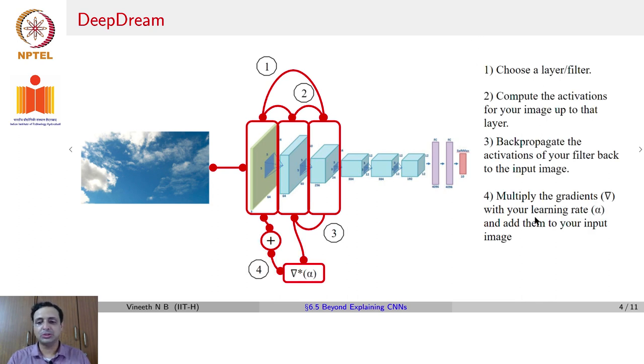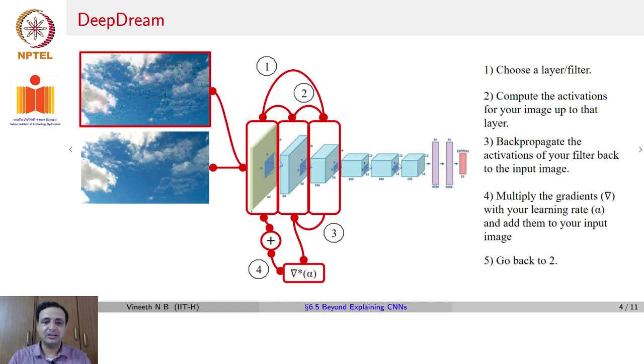And now you multiply those gradients with your learning rate and add them to the input image. That is the gradient ascent that we talked about. What happens? You now see that you will get an image such as this. In this case, it is not a dog, it looks like a bunch of buildings that you add to the original image.